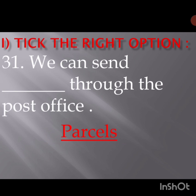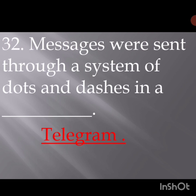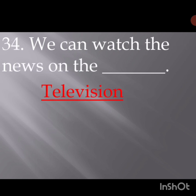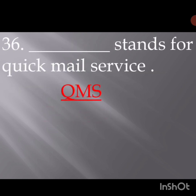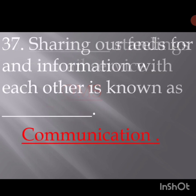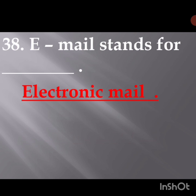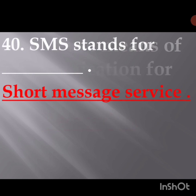We can send parcels through the post office. Messages were sent through a system of dots and dashes in a telegram. We talk to people on the telephone. We can watch the news on the television. The internet is a worldwide computer network. QMS stands for Quick Mail Service. Sharing our feelings and information with each other is known as communication. Email stands for electronic mail. We use means of communication for recreation. SMS stands for Short Message Service.